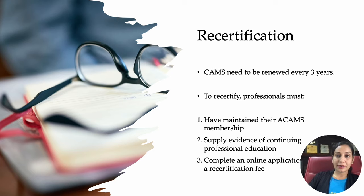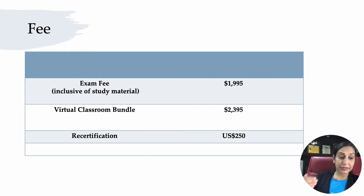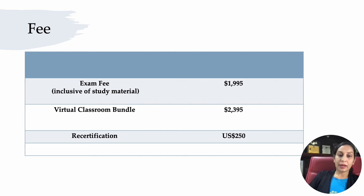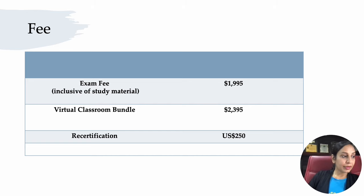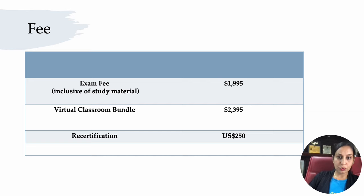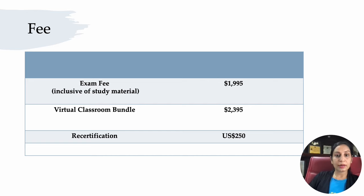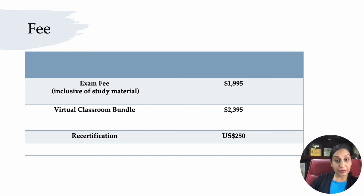The question which is always on our mind is: how much is the fees involved? The exam fee, which includes the study material, is $1,995 US dollars. There are variations of this package available, so you can visit the ACAMS website. There is a retail pricing, and the pricing for the public sector is slightly different. They also have two different types of packages for students. If you purchase the virtual classroom bundle, then the pricing goes slightly up to $2,395 US dollars, which also includes some interactive sessions. Recertification cost is $250 US dollars, which you have to pay at the time of recertification.